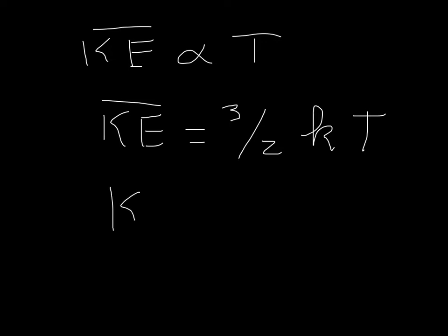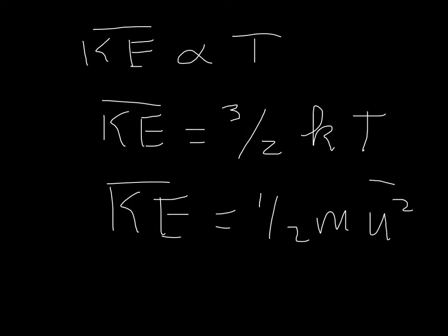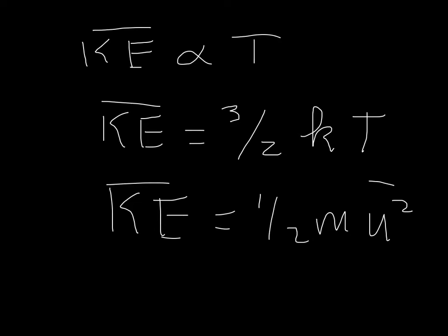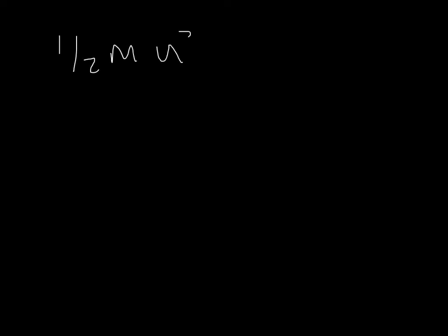We also know that the average kinetic energy is equal to one-half m u squared, the average of that. And so, since the average kinetic energy is equal to those two equations, obviously those two equations have to be equal to each other. We're going to set them equal to each other and see what we get. So, one-half m u squared, the average of that, has to be equal to three-halves K T.